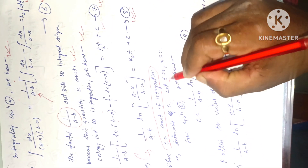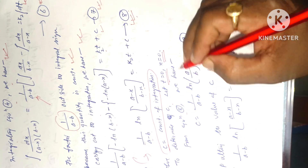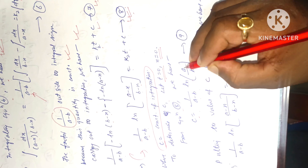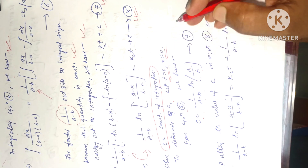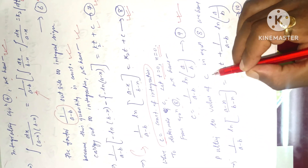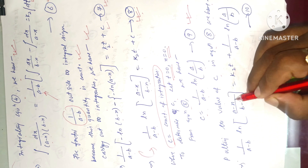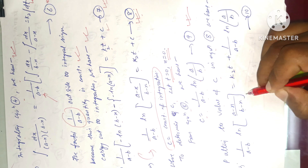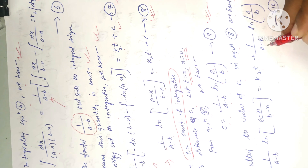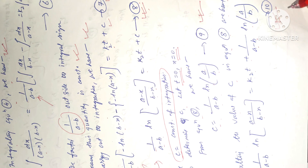To determine c, let t = 0 and x = 0. Then from equation 8: c = 1/(a − b) × ln(a/b), equation 9. Substituting the value of c into equation 8: 1/(a − b) × ln[(a − x)/(b − x)] = k₂t + 1/(a − b) × ln(a/b), equation 10.